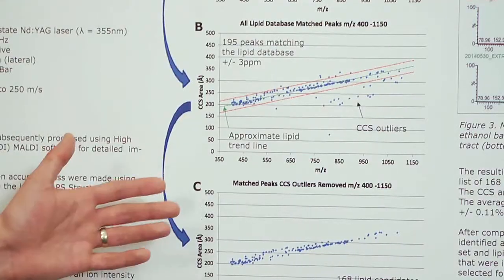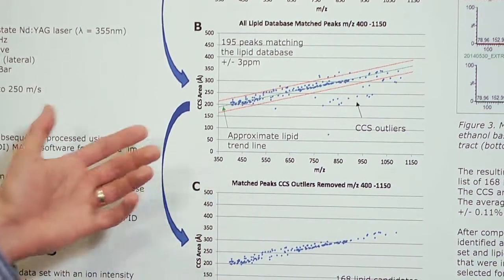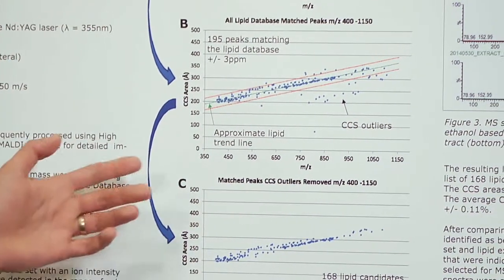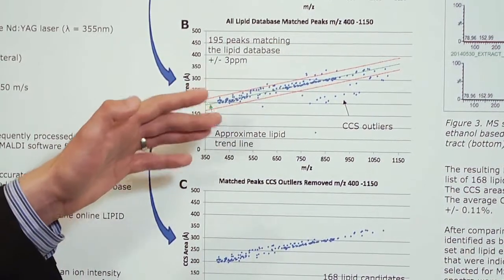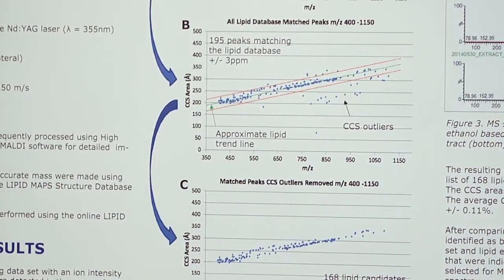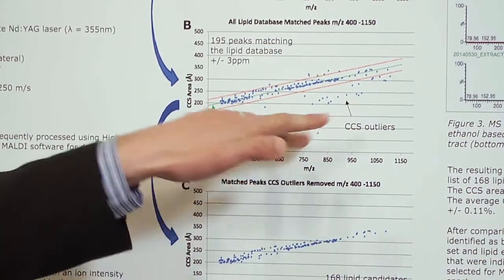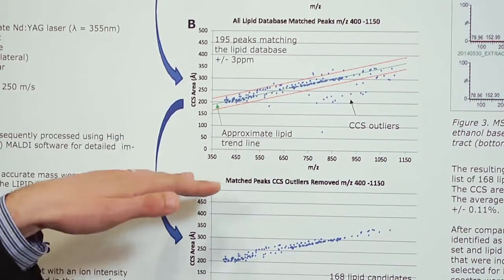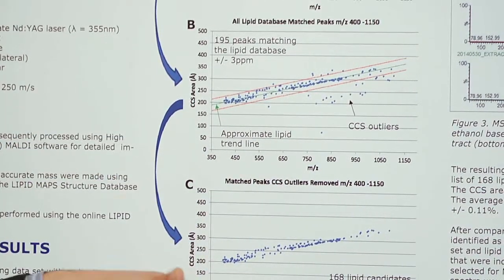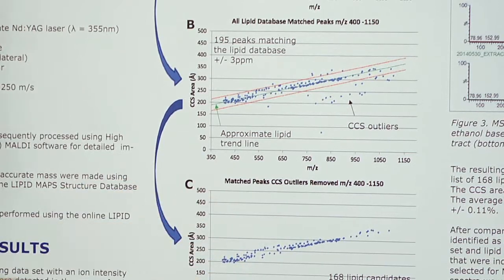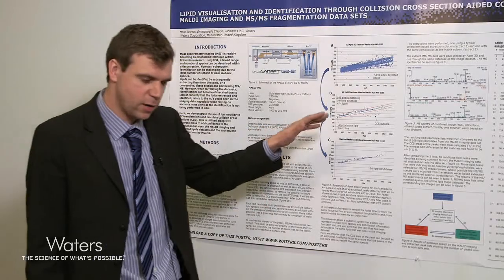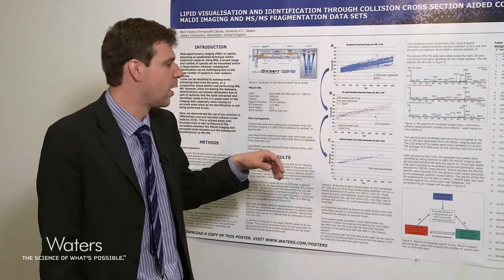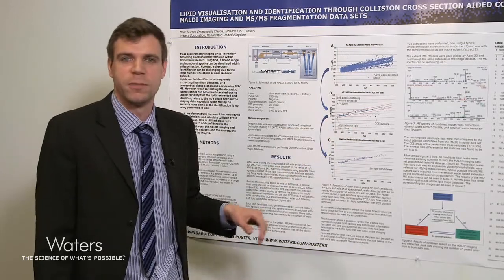When we plot this to show the m/z and the collision cross-section area, we can see that there is a dominant trend line through the center of our data set, but there are also a number of collisional cross-section outliers, the majority of which are showing cross-sections much lower than we would expect for a lipid species. We can use this trend line to filter our data set and remove some of these potential spurious matches.